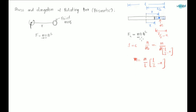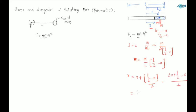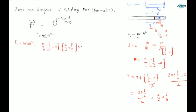Now what about r? r is the distance x plus the distance to the center of gravity of this portion, which is half of (l/2 - x). So r = x + (l/2 - x)/2, which gives r = (2x + l/2 - x)/2 = x/2 + l/4. Substituting m and r into Fx = m·r·ω²: Fx = (M/l)·(l/2 - x)·(x/2 + l/4)·ω².